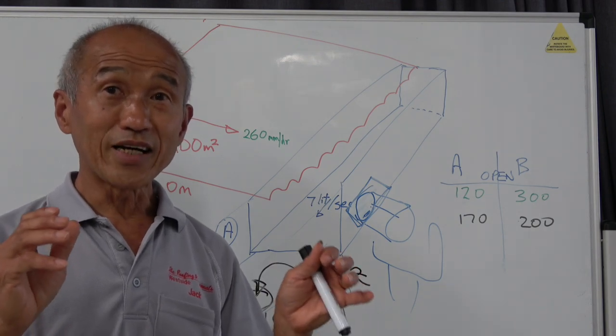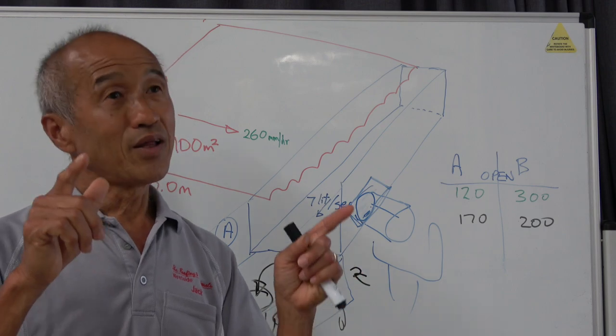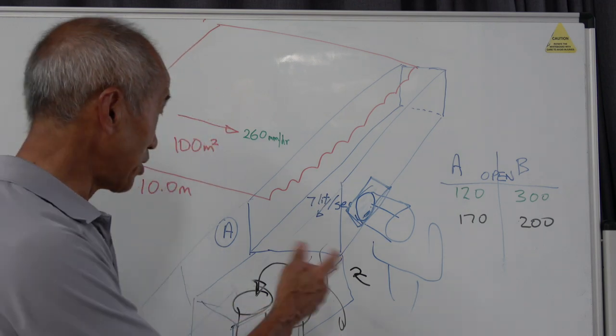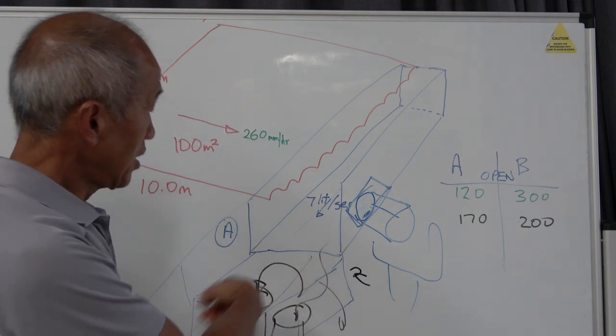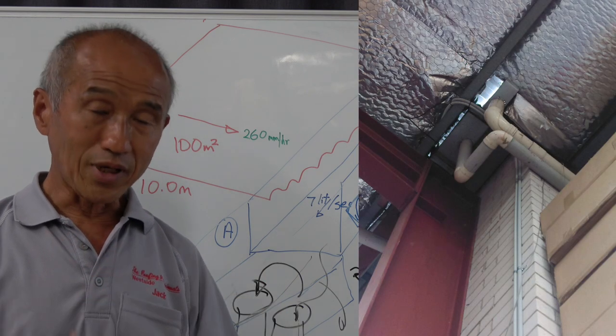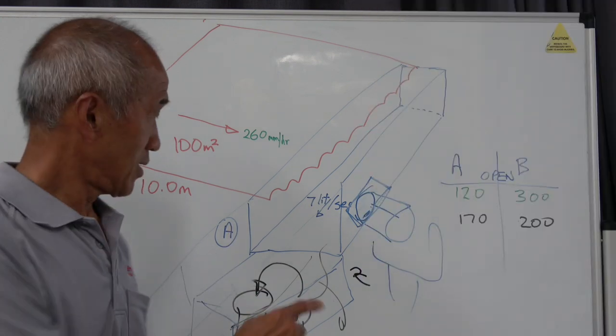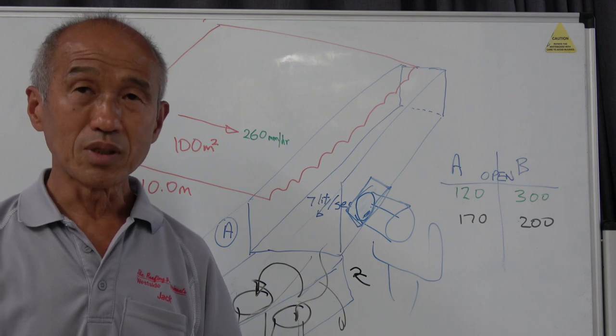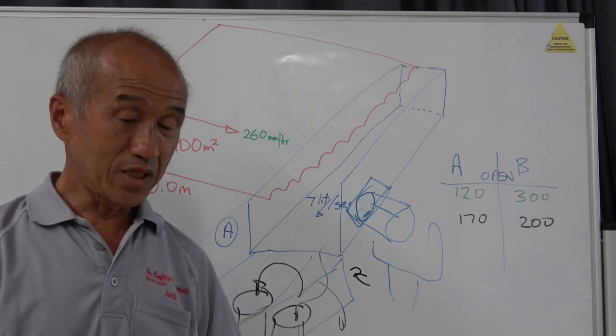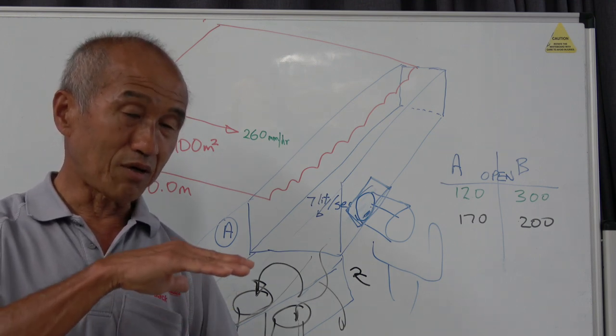And this option is an example of the gap between theory and practice. Because we do see situations where builders or roofers have chosen to use this scenario: a sump with two downpipes, one normal and one overflow. We don't often see a proper baffle system. Sometimes what we see is one of the downpipes will extend past the base of the sump.